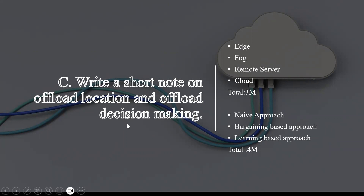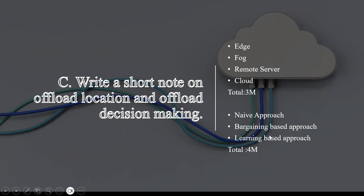For offload decision making — four marks — there are three approaches: naive approach, bargaining-based approach, and learning-based approach. List all three and write a short definition for each. Together, offload location and decision making total seven marks. If they ask you to write in detail about a specific approach, then explain it fully with applications; but here, a brief definition for each approach is sufficient.